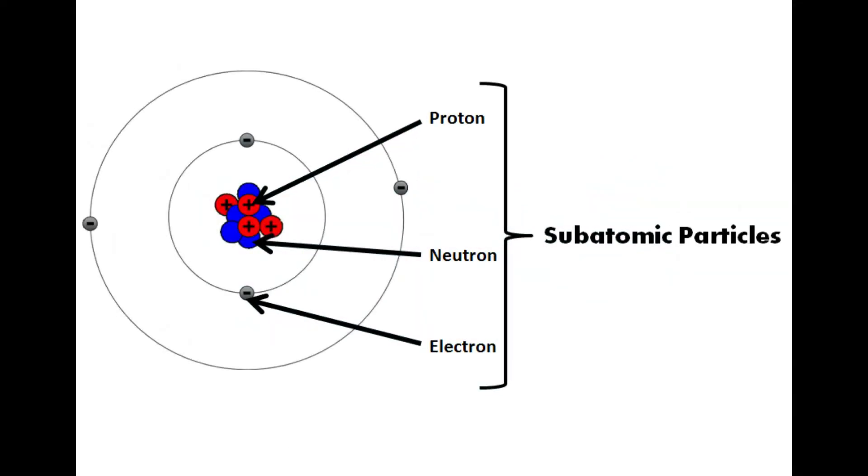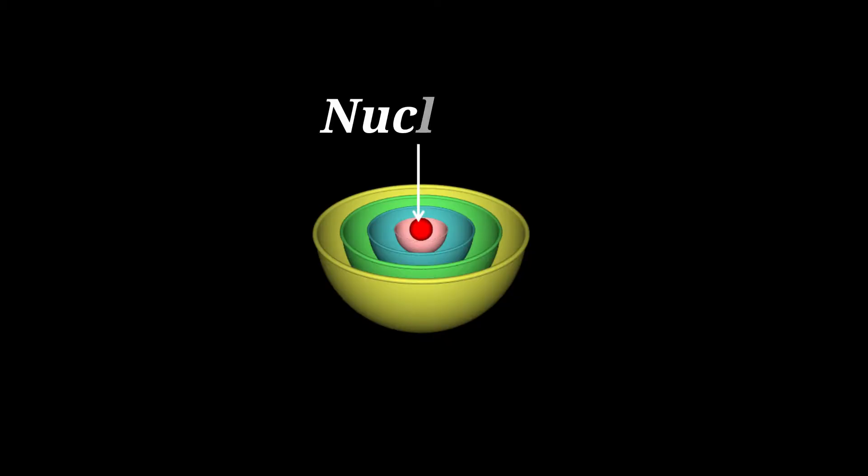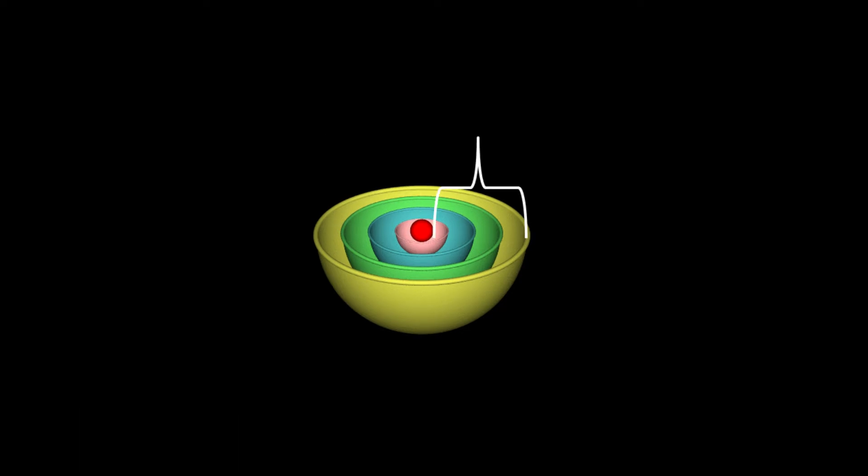The atom can be separated into two basic regions. They are the nucleus, which is the center of the atom that contains the protons and neutrons. Additionally, protons and neutrons are referred to as nucleons. The other basic region of the atom is the outer region, and this is where the electron orbits or moves around the nucleus.